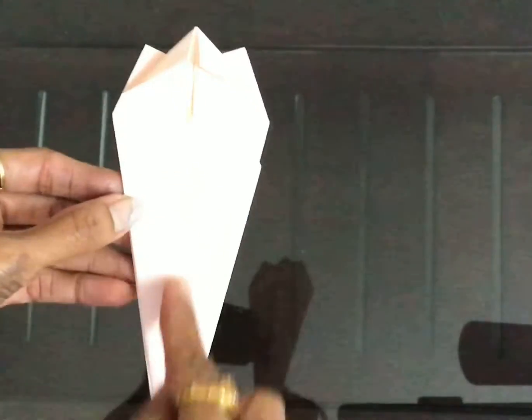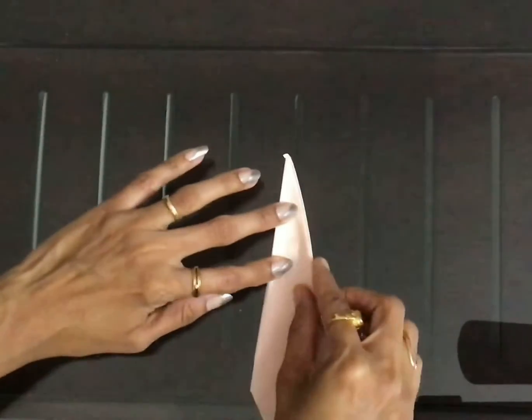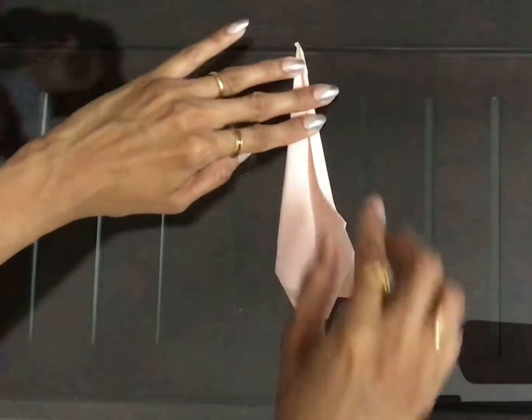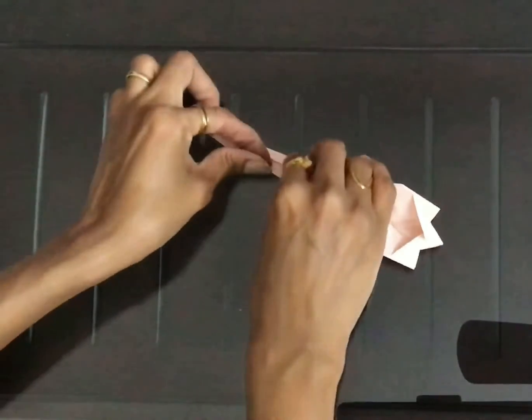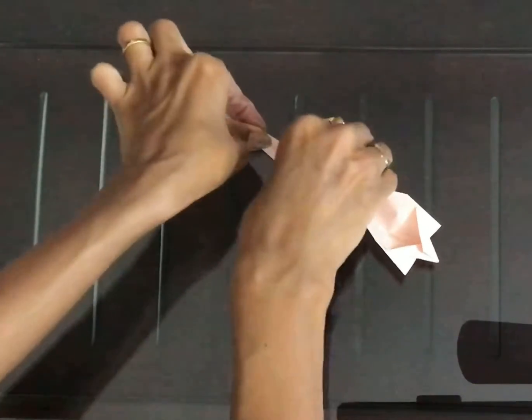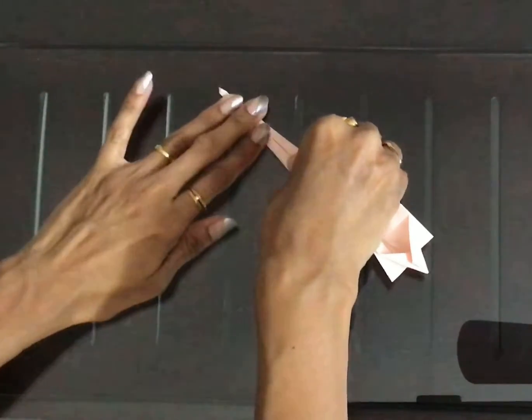Now bring these two sides to the center crease and make this portion thinner to create the neck of the swan by leaving around one to one and a half inch gap in between.